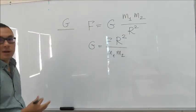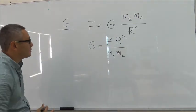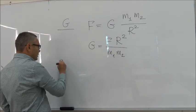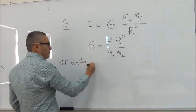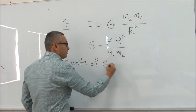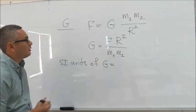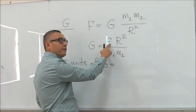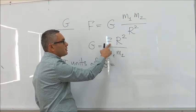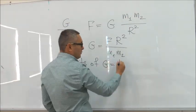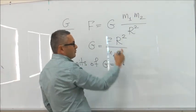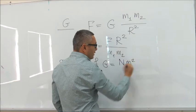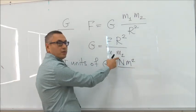And now we are pretty much ready to write down the units. So SI units of G are: we have F here which stands for force, and as you know force is measured in Newtons. So we are going to say N or Newtons. R squared is measured in meters, so meters squared, and m1 and m2 are